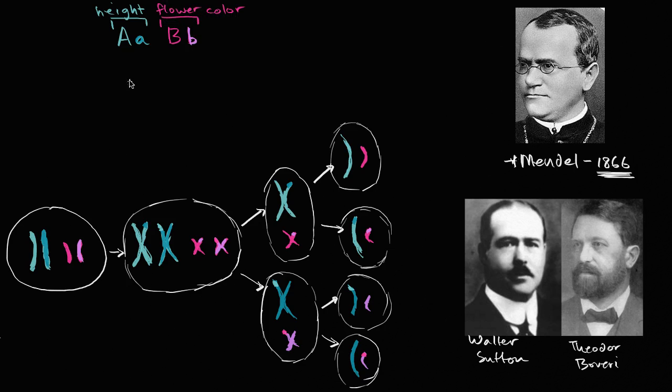And he recognized that there were different versions of those factors. And so a given plant might have one of the tall versions. So they might have a tall version for the height factor, and they might have a short version. Or they might have two talls, or they might have two shorts. Or they might have a red factor, and they have a pink factor. Or they could have two reds. Two reds, it would look like that. Or two pinks would look like that. But the important realization was that there was these versions of the factor.